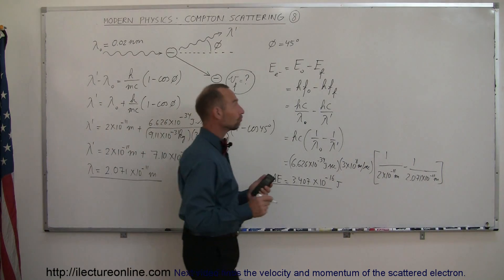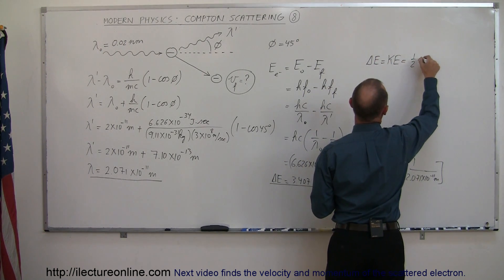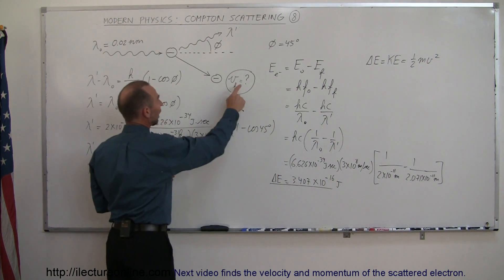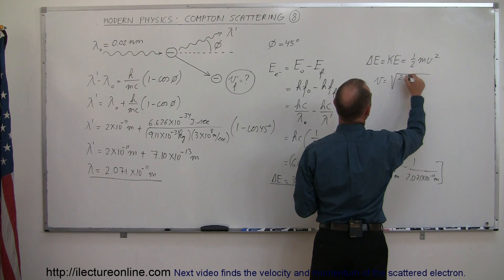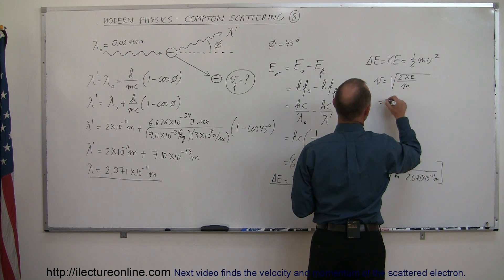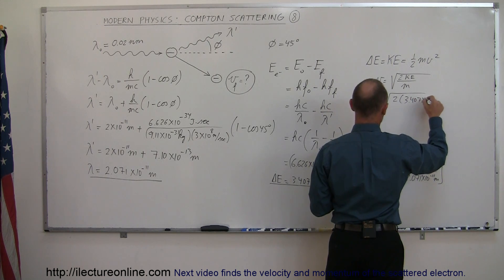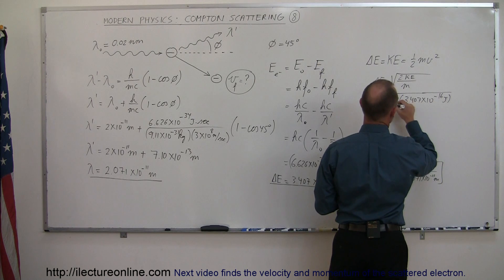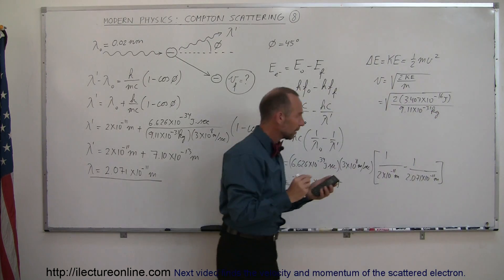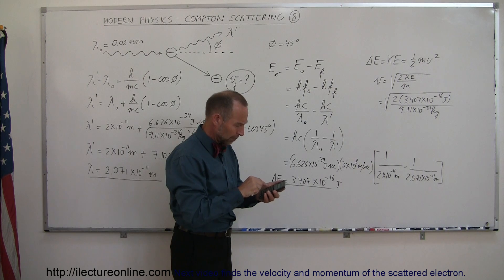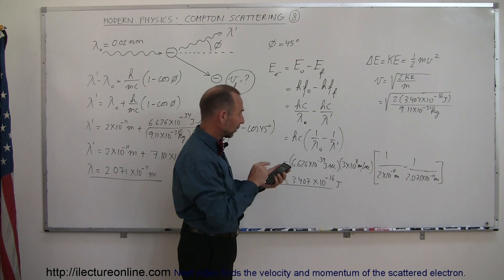Now that would be kinetic energy. So the change in energy of the photon equals the kinetic energy of the electron, which is ½mv². We're trying to find the velocity of the electron, so the velocity equals the square root of 2 times the kinetic energy divided by the mass of the electron: the square root of 2 times 3.407×10⁻¹⁶ joules divided by 9.11×10⁻³¹ kilograms.